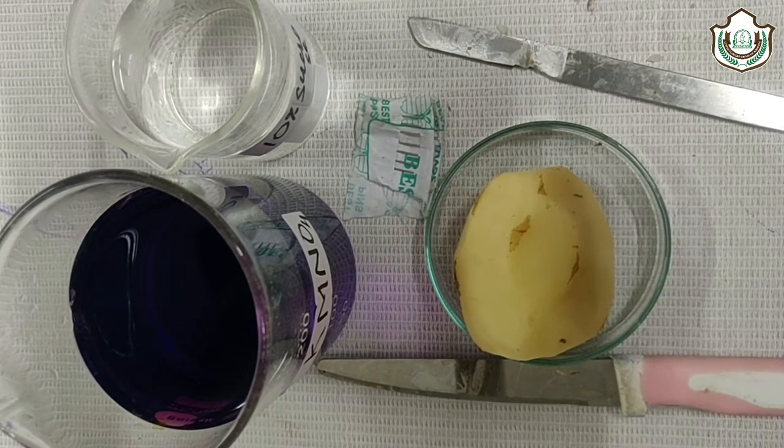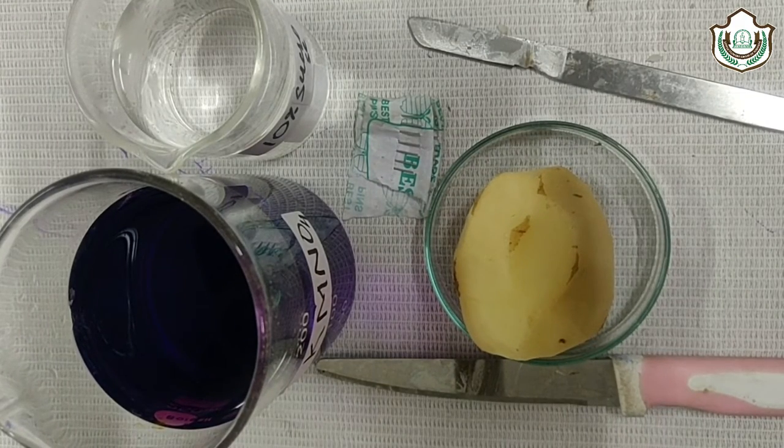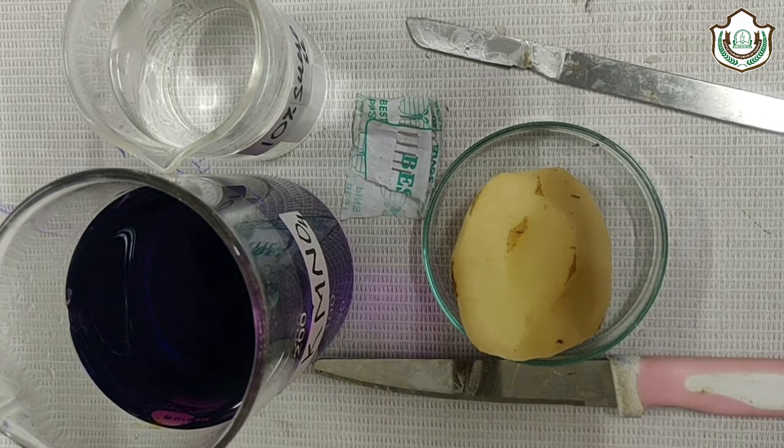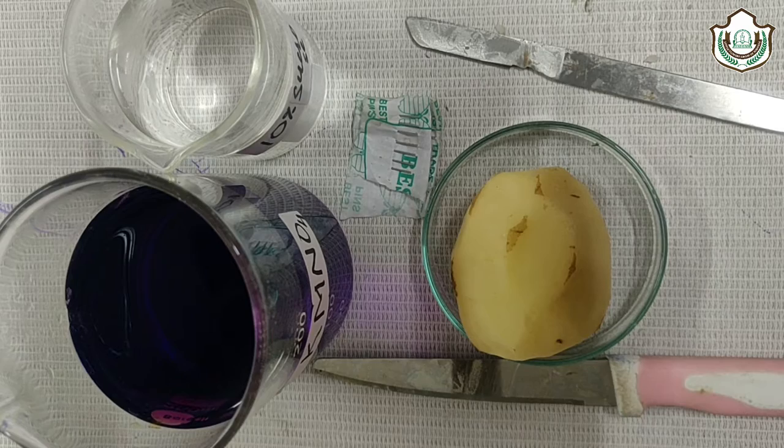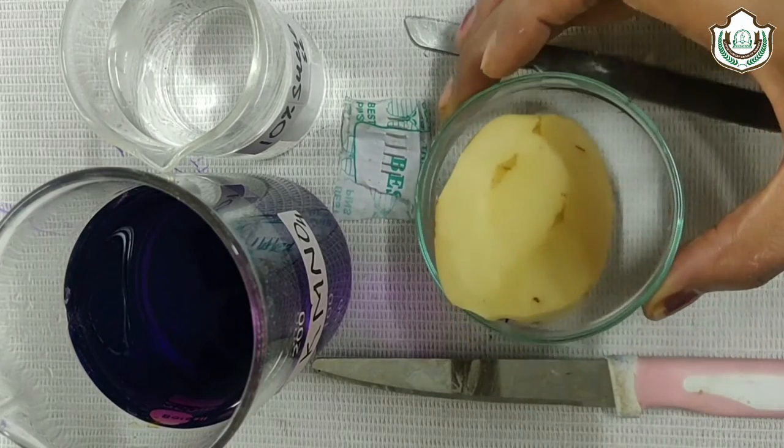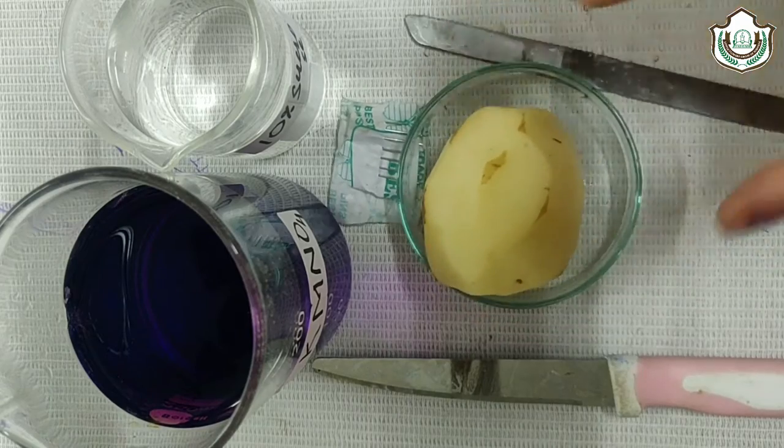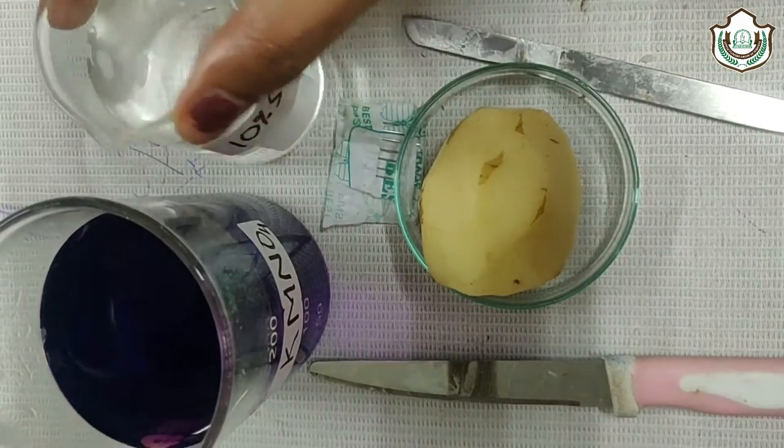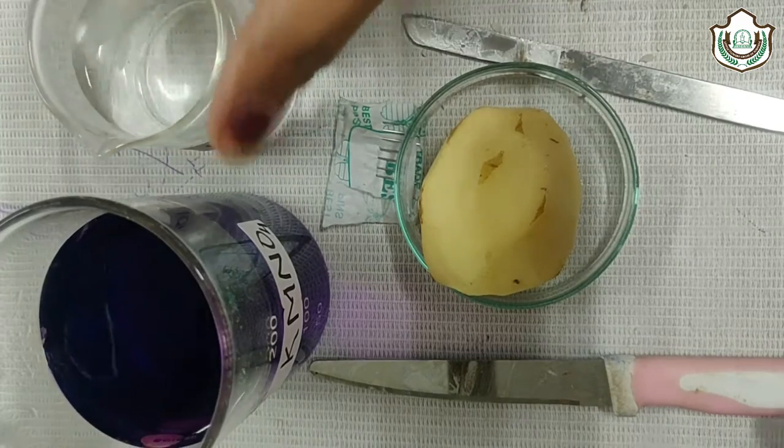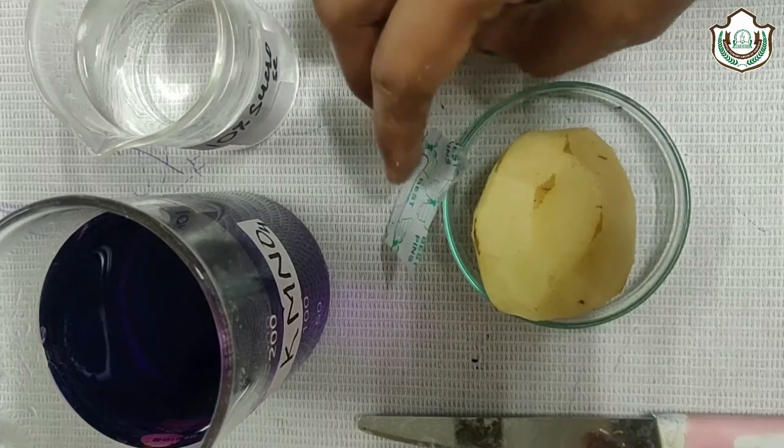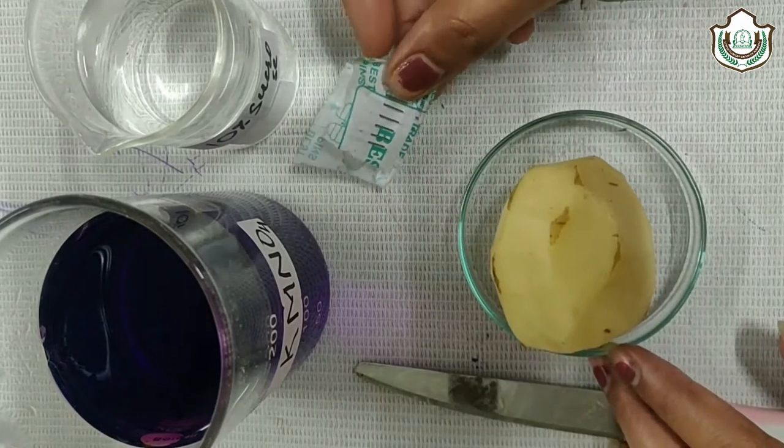Good morning all of you. Today we are going to perform an experiment to study osmosis through potato osmometer. For this, the materials required are peeled potato, potassium permanganate solution, 10% sucrose solution, knife, scalpel, and oil pen.